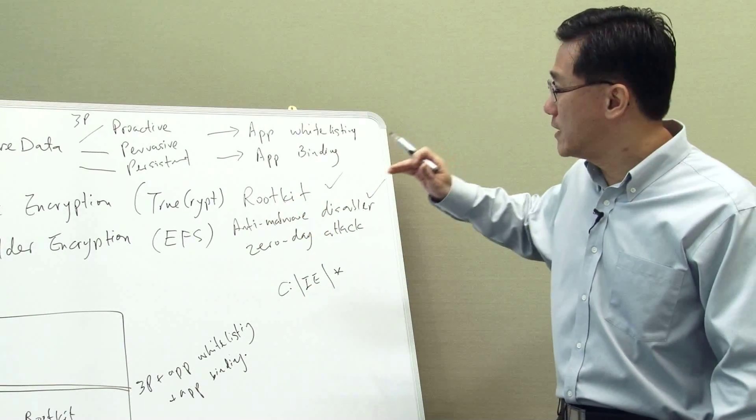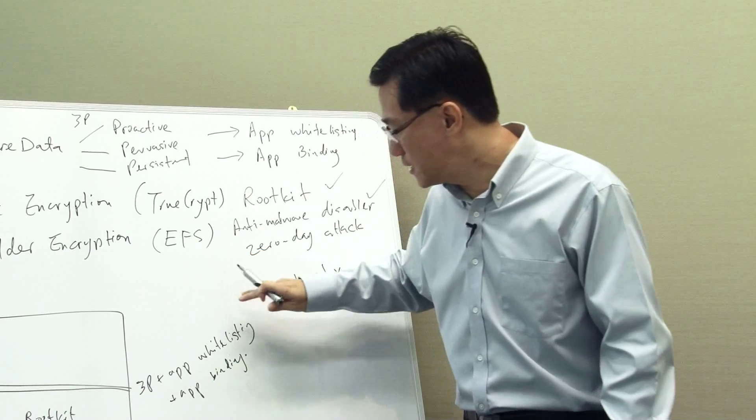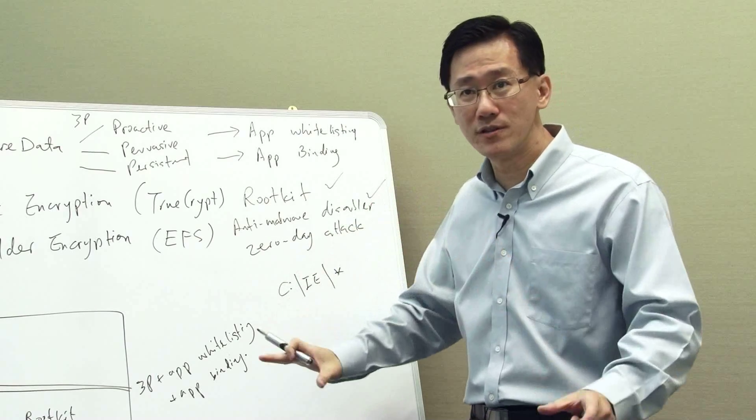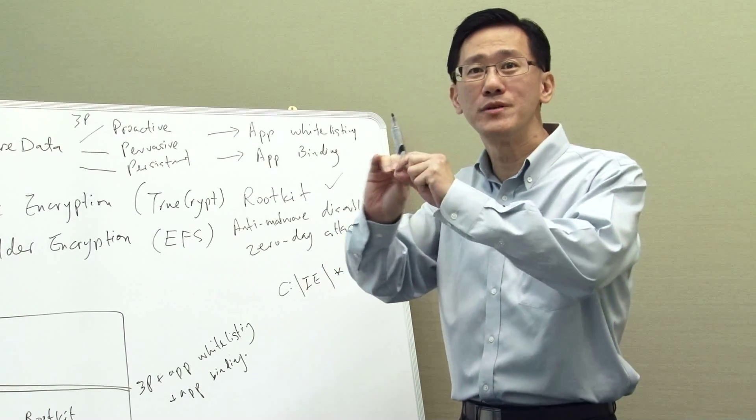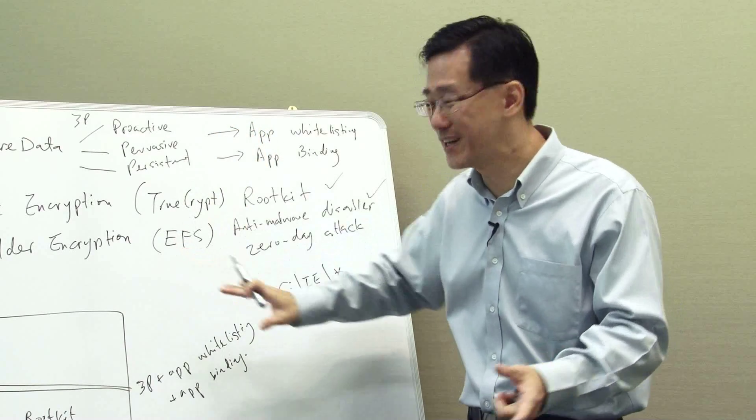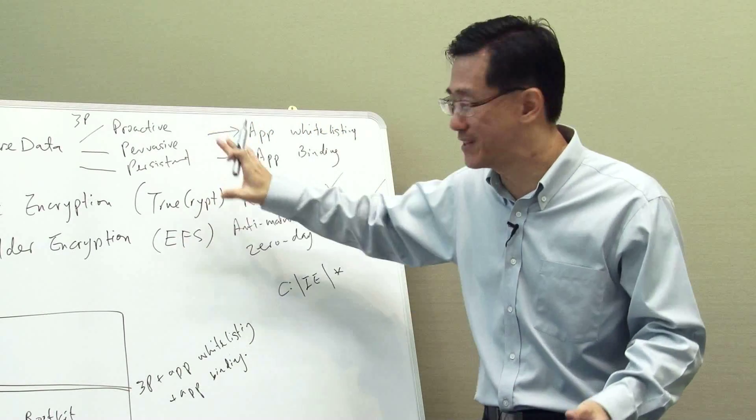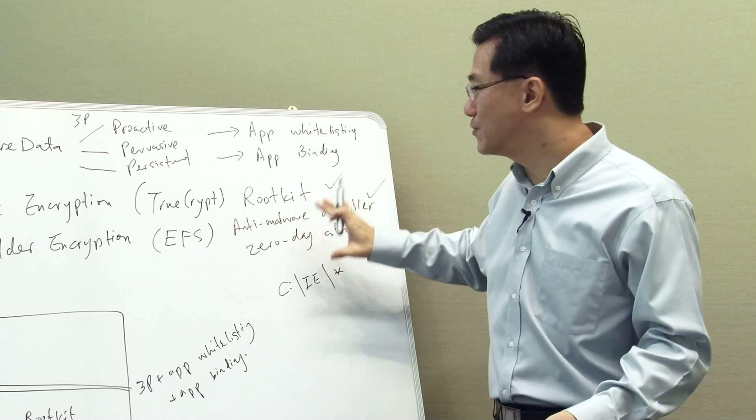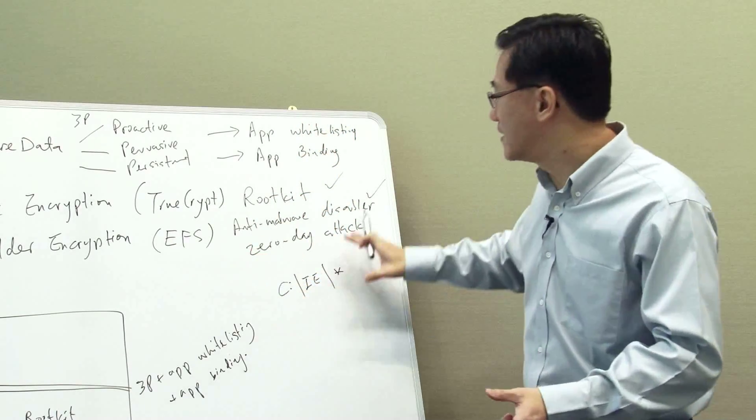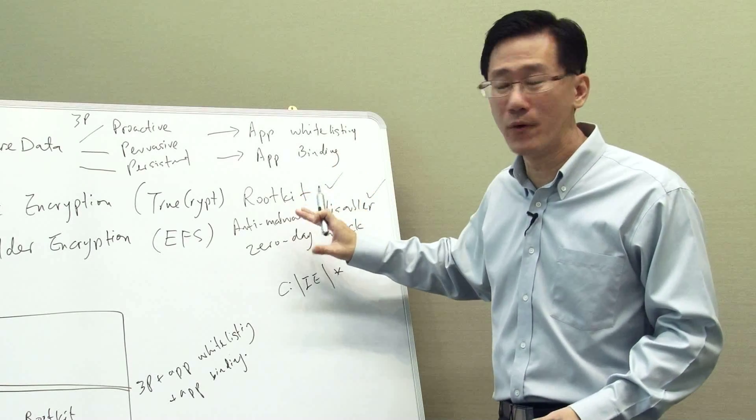So together with 3P, application whitelisting, and application binding, we have created a solution that effectively protects your data. We remove the weakest link, which is called the end user, from the equation, so that data always gets encrypted and protected.